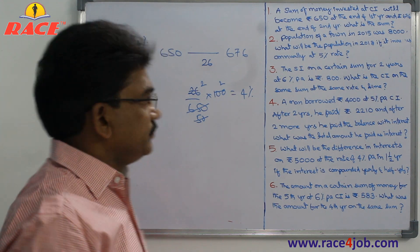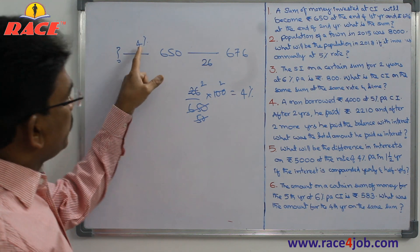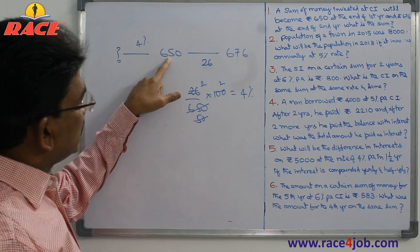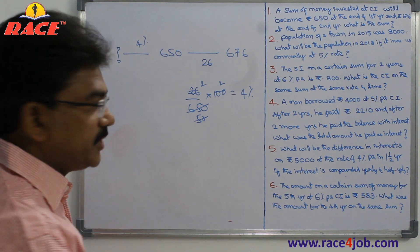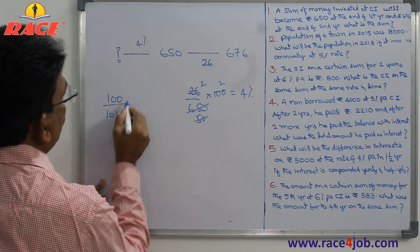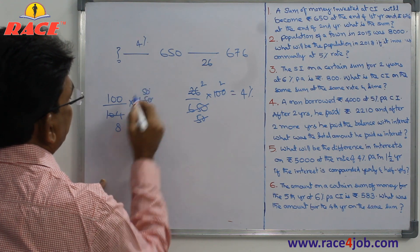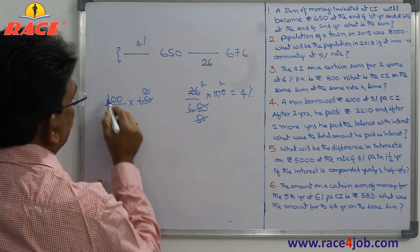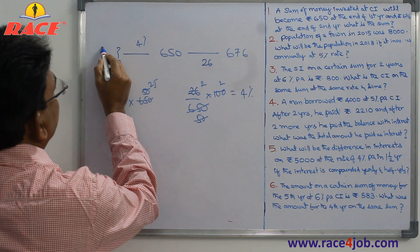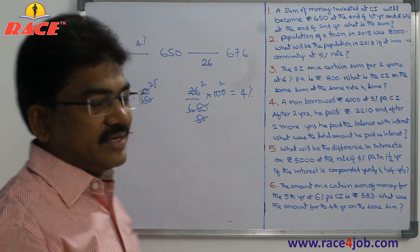Now we have the rate of interest. Principal is required. At 4% interest, 104% equals 650. We need to find 100% which is the principal. So 100 divided by 104 into 650 gives us 625. So 625 is the principal.